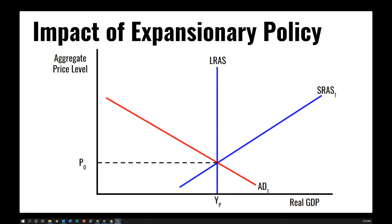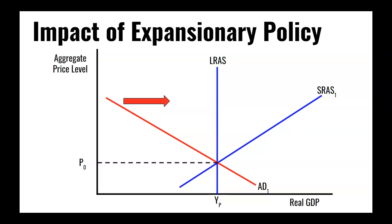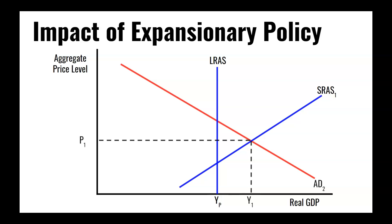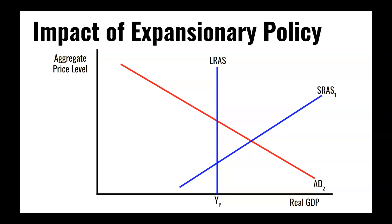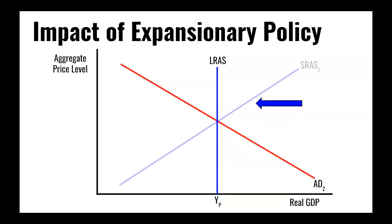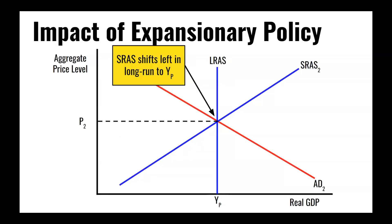Visually, we could be at long-run equilibrium, and if we pursue expansionary monetary policy, aggregate demand will shift to the right. Output will increase, but prices will have gone up. So in the short term, there's an inflationary gap and an increase in output. However, because of this increase in employment, nominal wages should rise, causing short-run aggregate supply to shift back to the left, bringing the economy back to long-run equilibrium at potential output, but now at a higher price level than before.